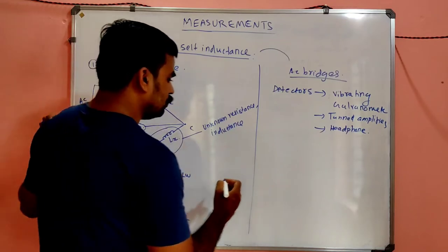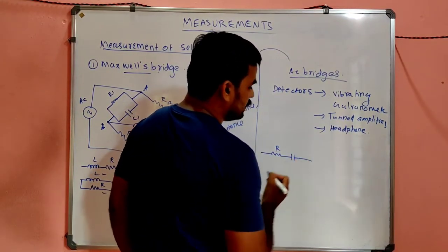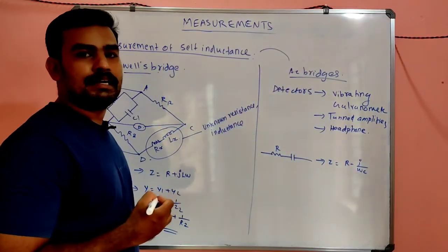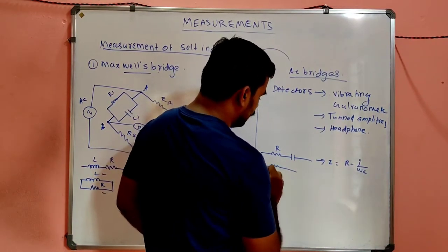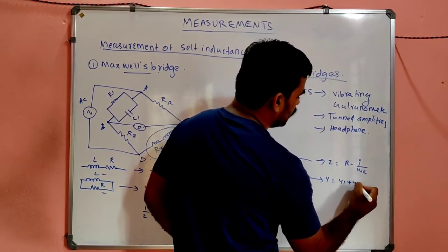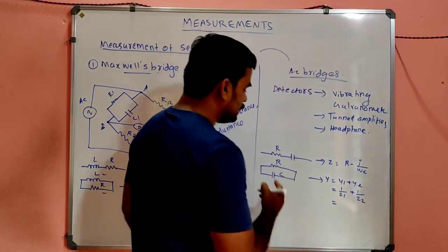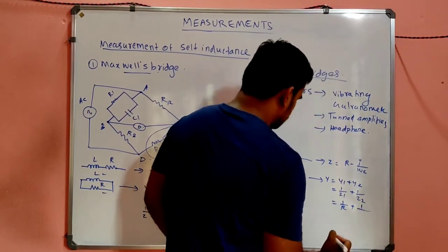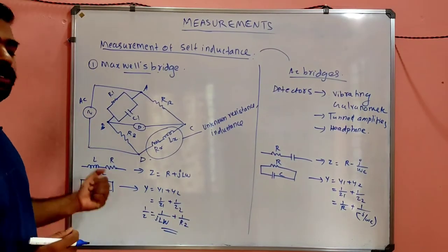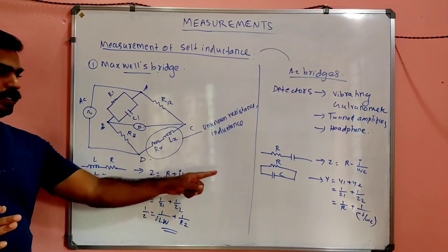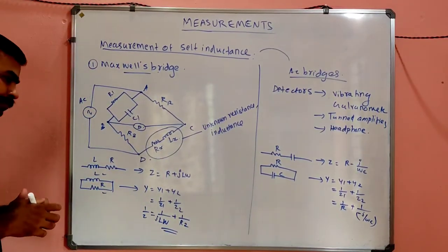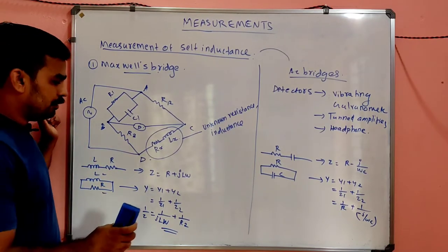Under balanced condition, the detector current or sound becomes zero. We vary C1 to achieve the balancing condition. When balanced, the detector output becomes zero — for a headphone the sound becomes null, for a tuned amplifier the output becomes zero. That is the null or balanced condition.